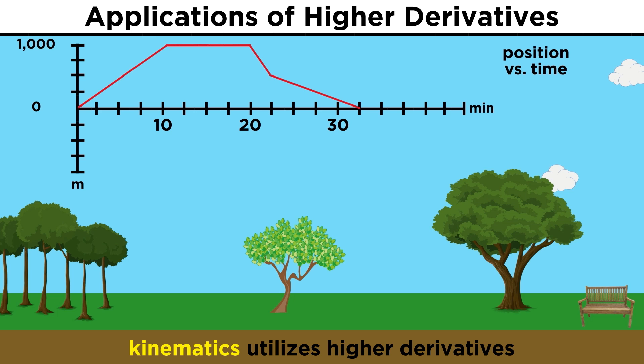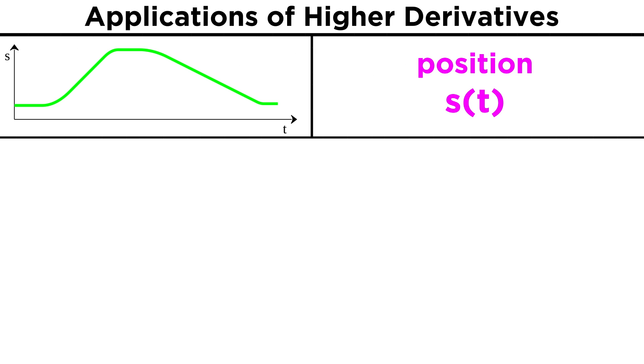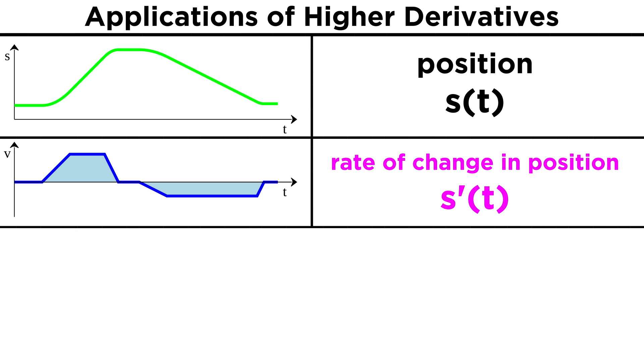Which we covered in the classical physics course. We can make a graph of the position of an object versus time. This could be a falling object, a speeding car, pretty much anything. As we've mentioned before, the derivative of this position function will be the rate of change in the function, or the change in position with respect to time. And that's velocity. So velocity is the derivative of position.